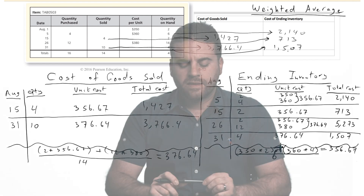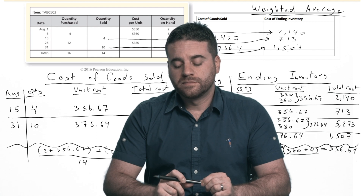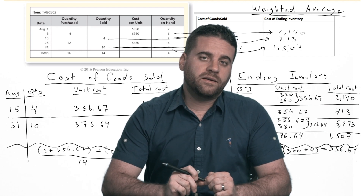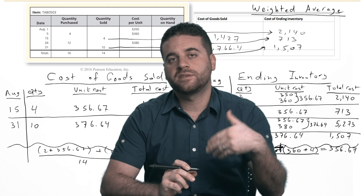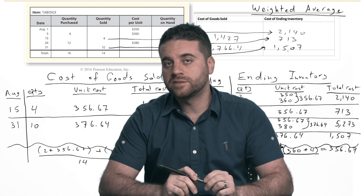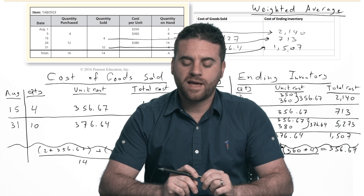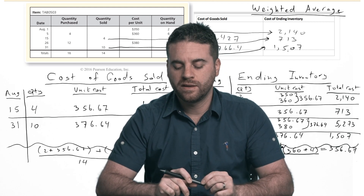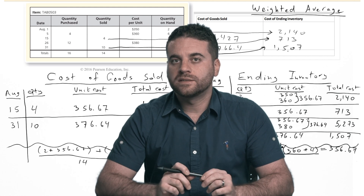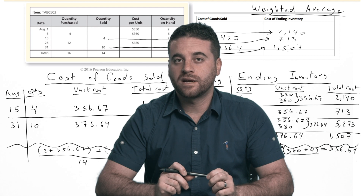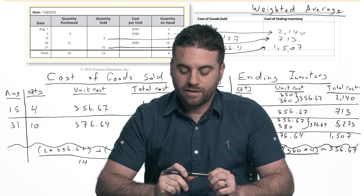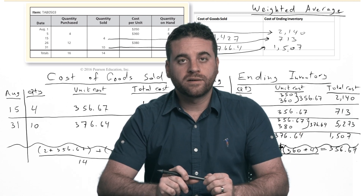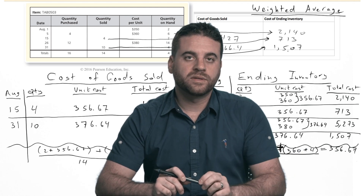Weighted average is where many students make mistakes — they forget to recalculate the average every time they have a new purchase. That recalculation only applies with the perpetual inventory system. With the periodic system, there's less calculation and it's a bit simpler. Once you have the cost of goods sold calculated, you can go ahead and record a journal entry using what was learned in the previous chapter.